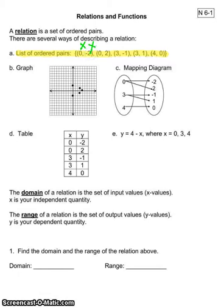The next way that it could be described is a graph. And here you have the plotted points again using your x and your y coordinate to plot the points. A third way is the mapping diagram. Here again you are listing out both your x and your y values. Here are your x's and here are your y's.